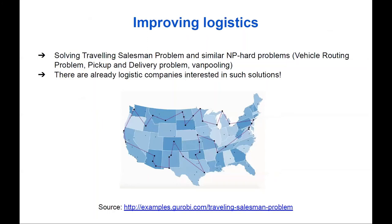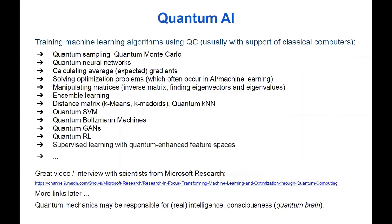Similar approaches can be used for improving logistics. You may have heard of the traveling salesman problem, the vehicle routing problem, or pickup and delivery. There are already logistics companies interested in such quantum solutions — they want to find the optimal order for visiting different customers to minimize travel time. At large scale this is really important, and since the problem is NP-hard we cannot solve it optimally on classical computers.